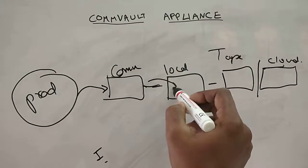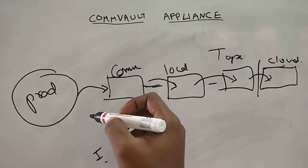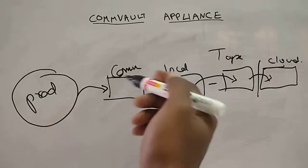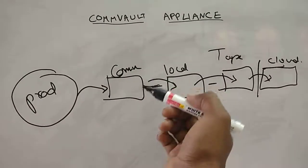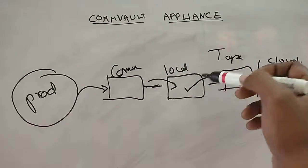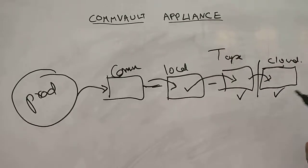We can configure a policy, or Commvault is smart enough to understand that recently backed-up data has to be in local and the data that is being aged will be sent out to tapes and clouds based on the availability and the distribution.